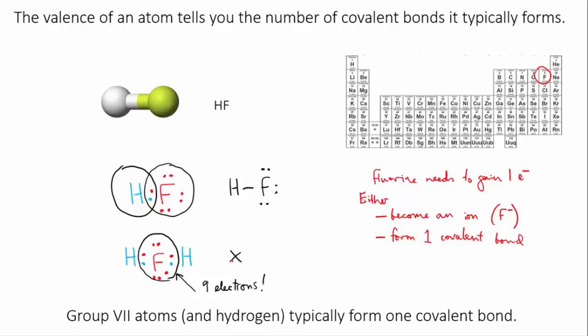So fluorine forms an ion with a charge of minus 1 when it's ionic, and it forms one covalent bond when it's covalent.